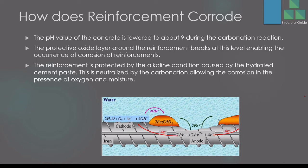Carbonation neutralizes this protective alkaline layer, then allowing the reinforcement to corrode. When there is oxygen and moisture present, the reinforcement will corrode. So the key factors are oxygen and moisture. When the protective layer is damaged and moisture and oxygen are present, corrosion will occur.